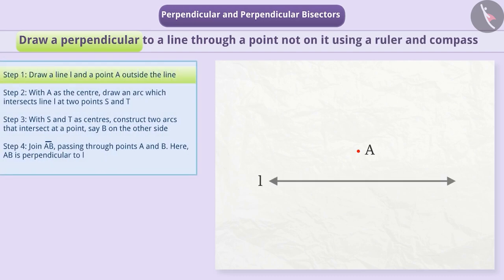Step 1: We are given a line L and a point A which is not on it. Step 2: With A as centre, draw an arc which intersects line L at two points S and T. Step 3: